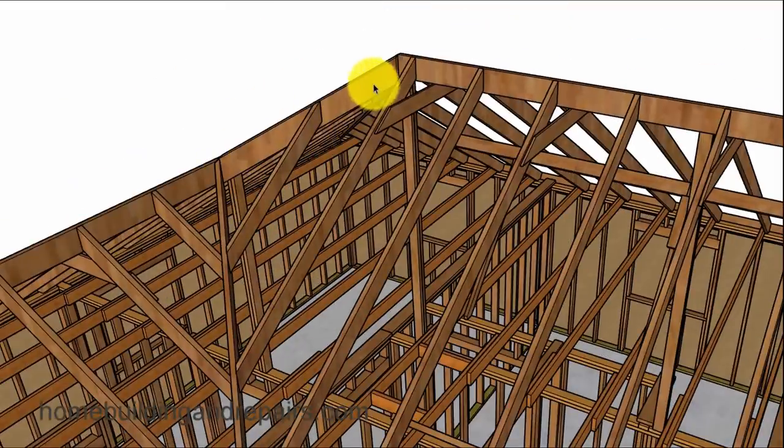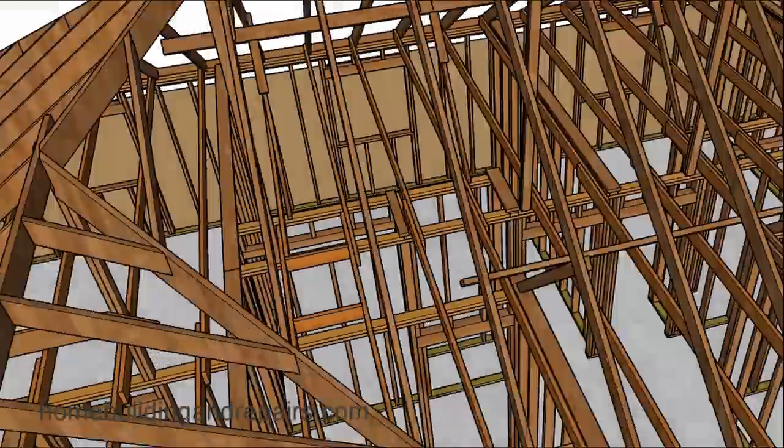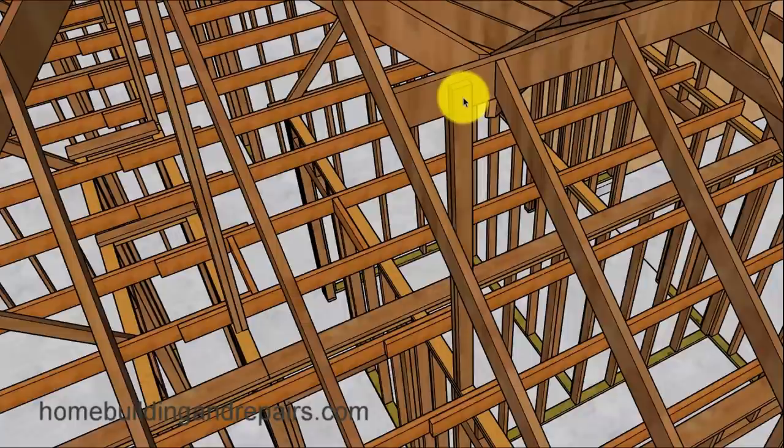Another view of the hip here with the fill rafter. It was real common to have some type of a vertical support for the ridges where you could put them in.